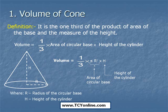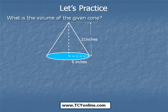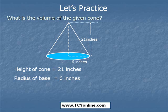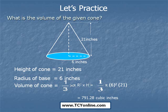Here, r means the radius of the circular base and h means the height. Now let's see an example. We need to find the volume of the given cone. The height is equal to 21 inches while the radius of the base is equal to 6 inches. So the volume of a cone is 1/3 × π r² × h. Plugging in r = 6 and h = 21, we get our final answer as 791.28 cubic inches.